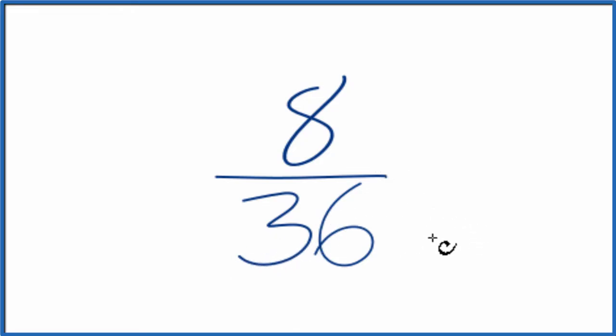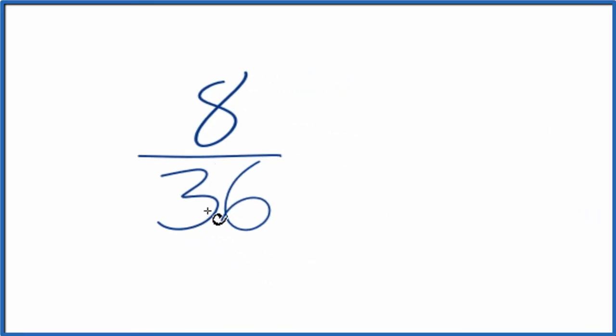To do that, we need to find a common factor, something that goes into 8 and 36. So these are the factors of 8 and 36.